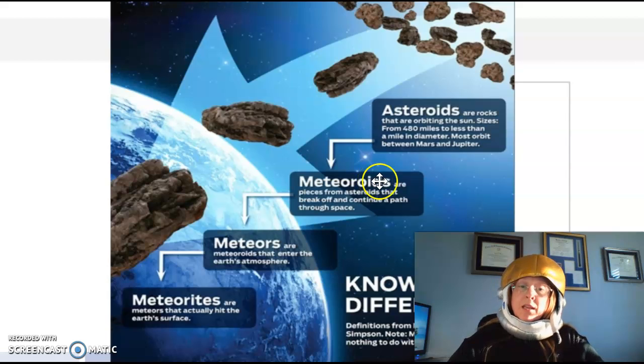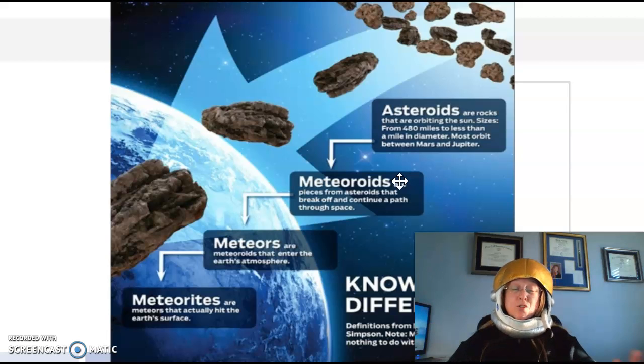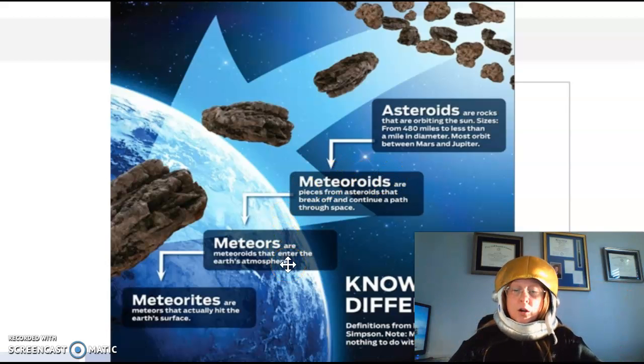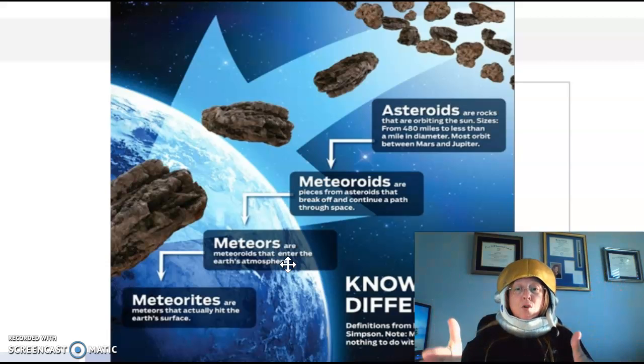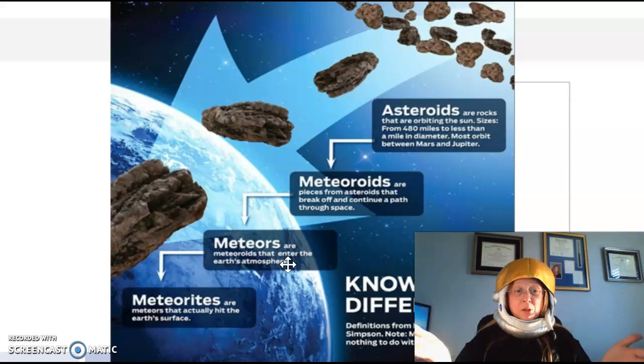Now, once that meteoroid hits the earth, travels towards the earth and hits the earth's atmosphere and starts to burn and look like a shooting star, we call it a meteor. Right? Now, once that meteor then actually lands on the earth's surface, we call it a meteorite. That's it. That's as simple as our notes get today.